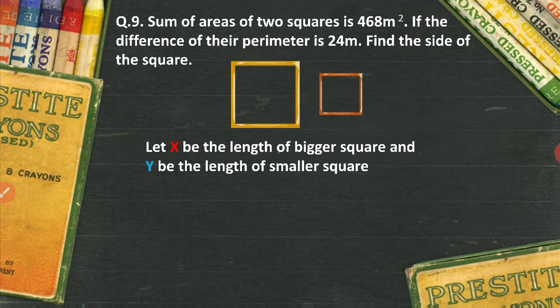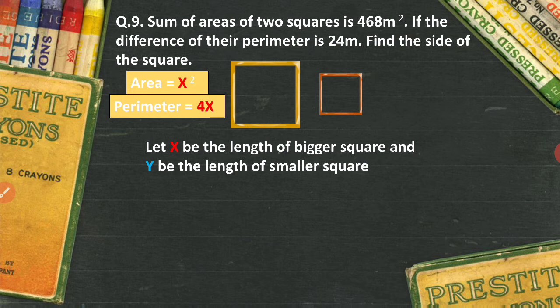If you consider this, then area of the bigger square will be side square, right? Area of a square is side square, so which means x square. And perimeter will be 4 times x. That is 4 is the number of sides multiplied by the measurement of the size. In this case it is x, so perimeter will be 4x. Similarly...